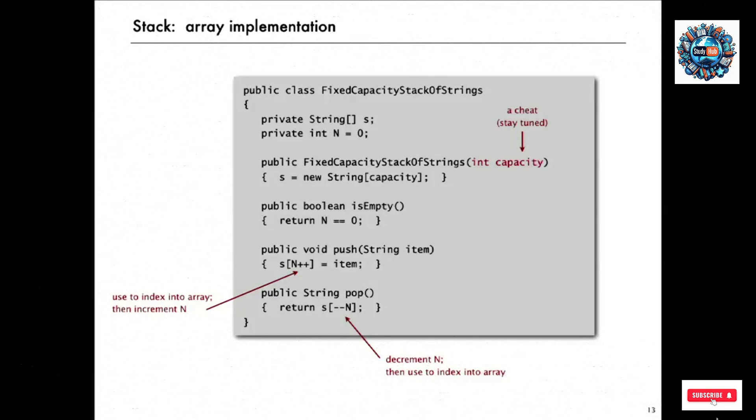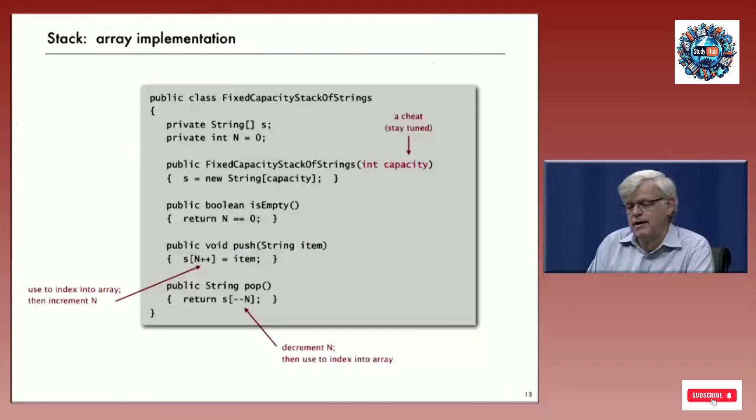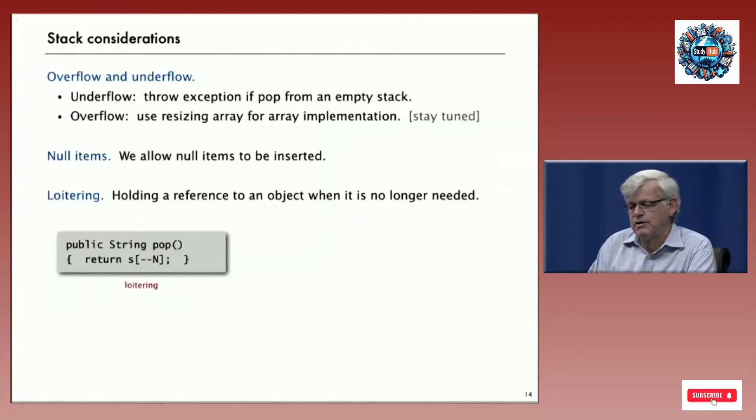But the code is nearly trivial if we have the capacity. To check if it's empty, we check if N is zero. To push an item, we use N to index into the array, put the item there and then increment N. That's the shortcut in many programming languages nowadays for use the index and then increment it. To pop, we decrement the index and then use it to return the item in the array. So each of the operations is a one-liner. This is a fine implementation for some clients. That's array implementation of stack but it breaks the API by requiring the client to provide the capacity.